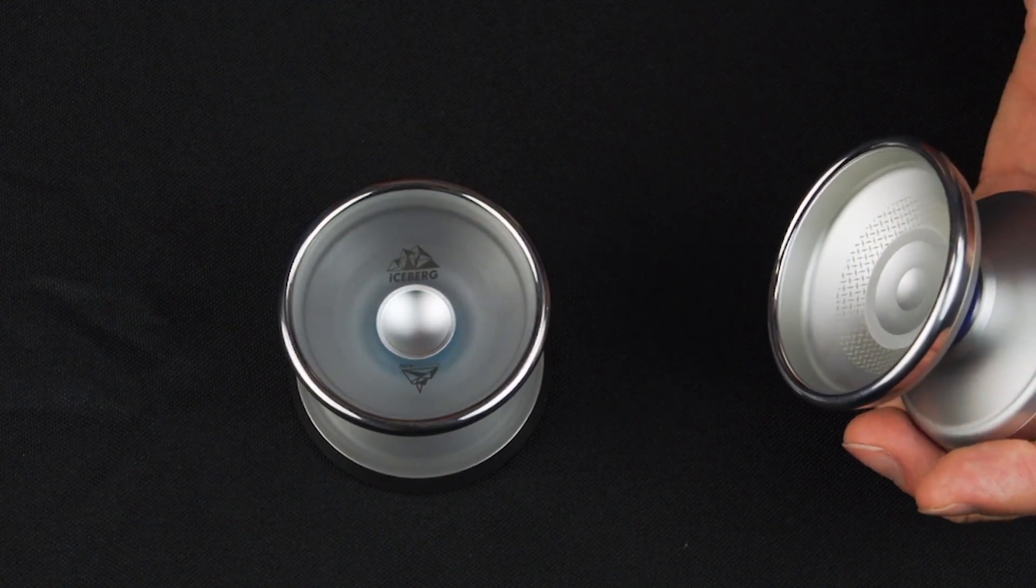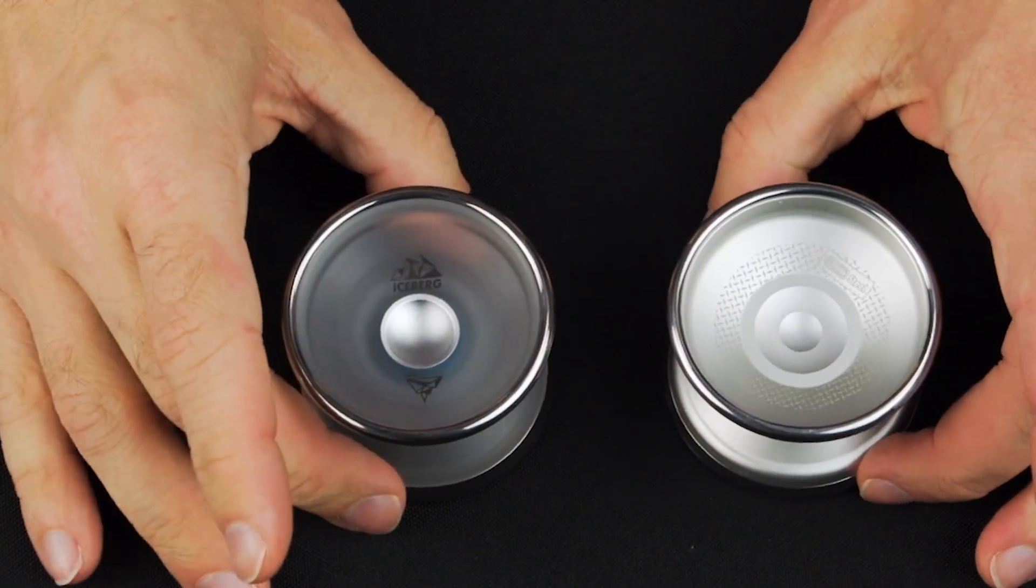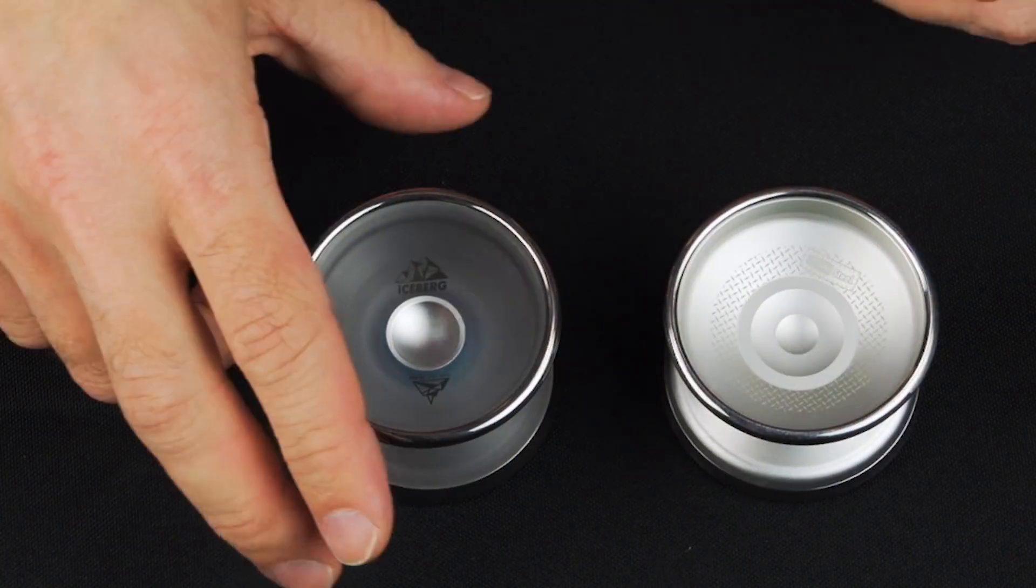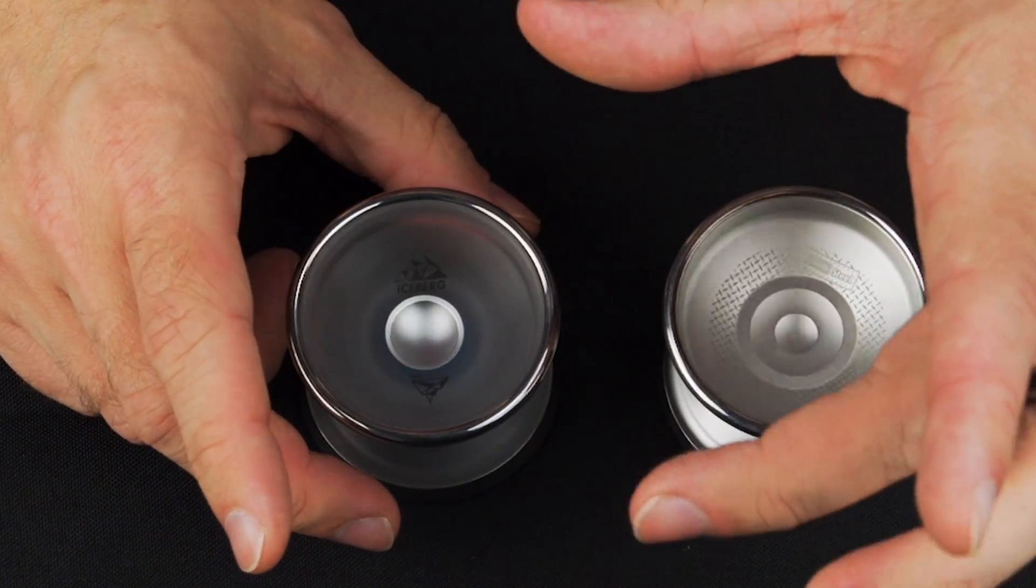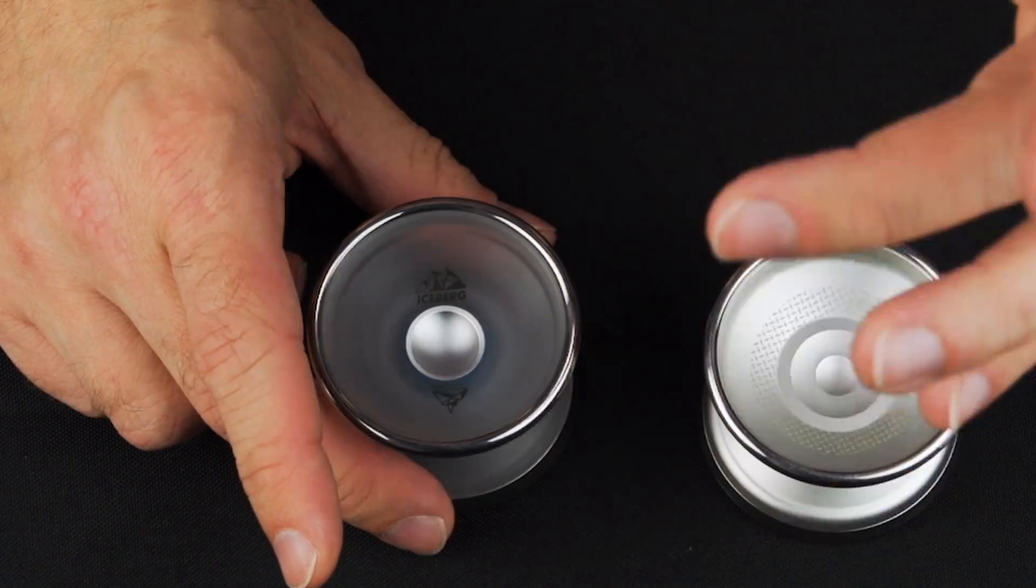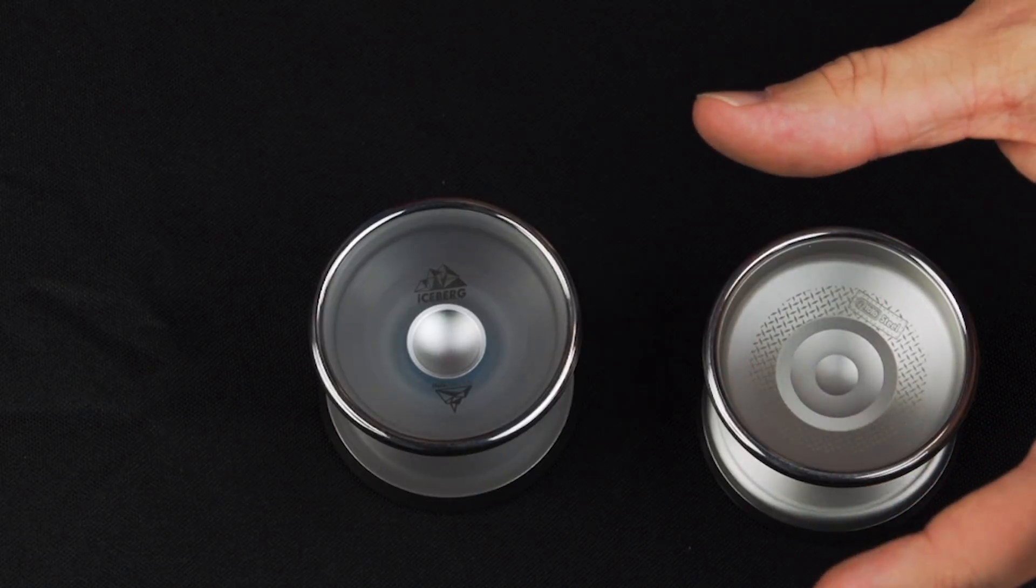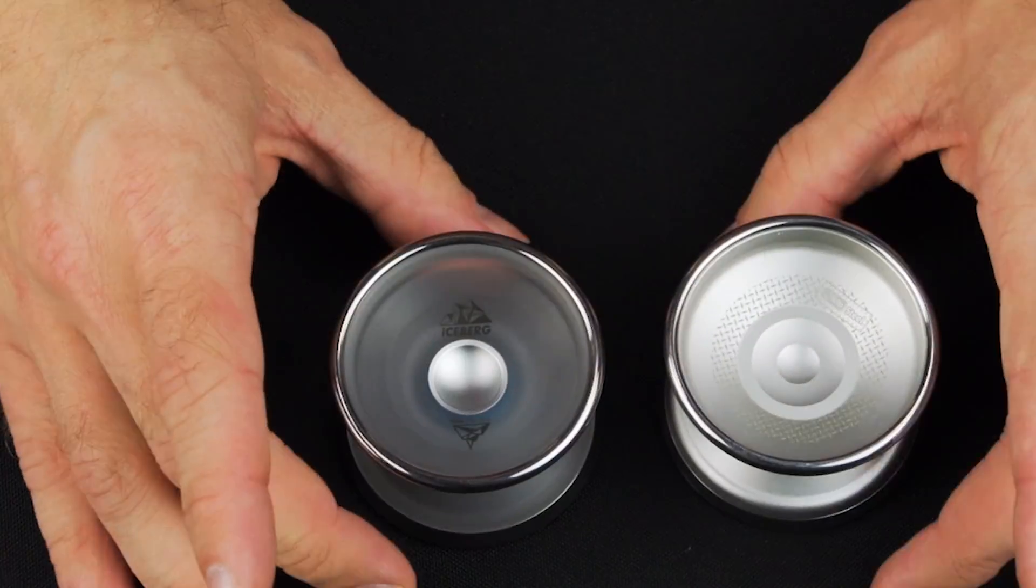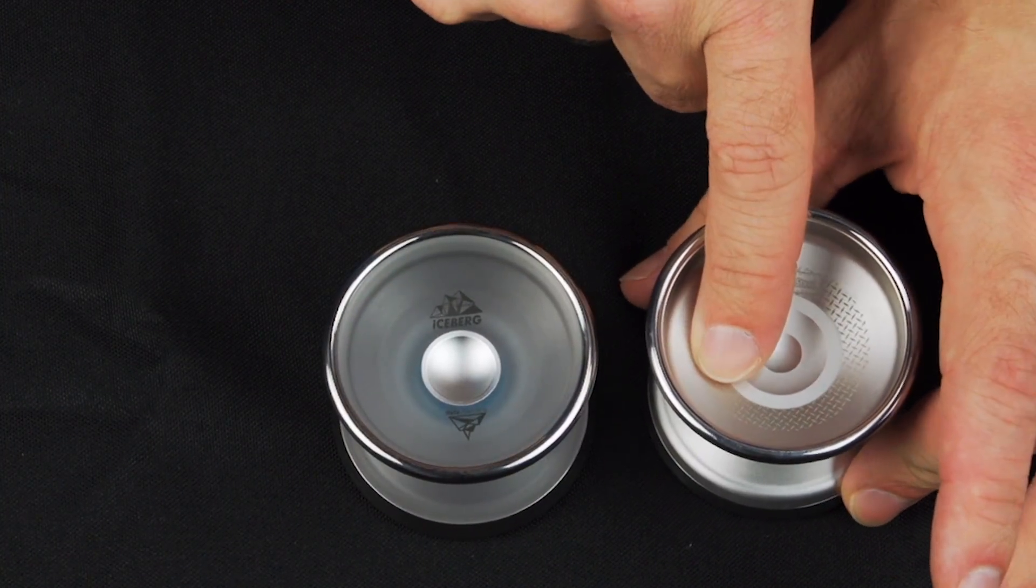So what they did with the Iceberg is they used the same techniques, instead of using an injection molding system, and heating the plastic up, they just took a block of polycarbonate, just like you take a block of aluminum, and they put it on the same type of machine, and they used the same type of tools to machine it,